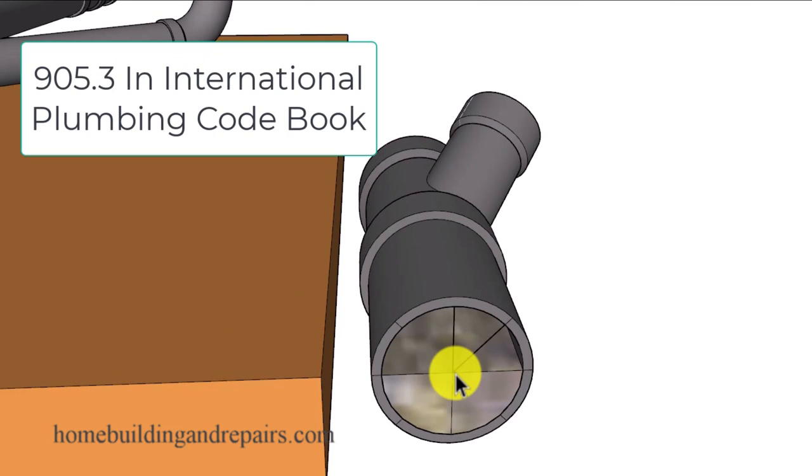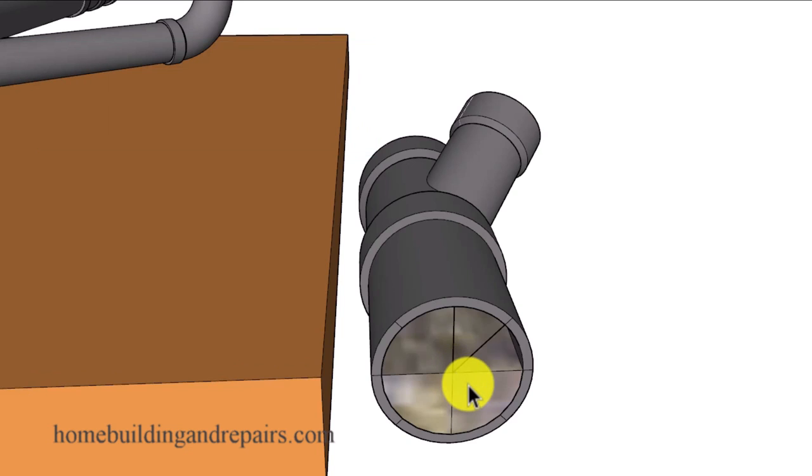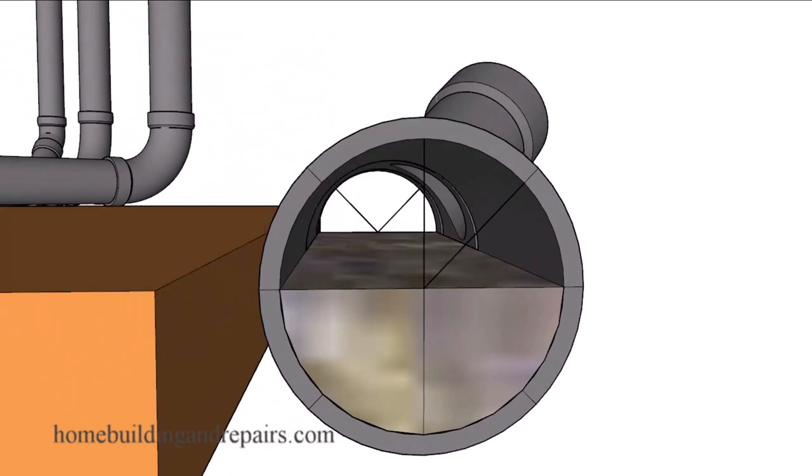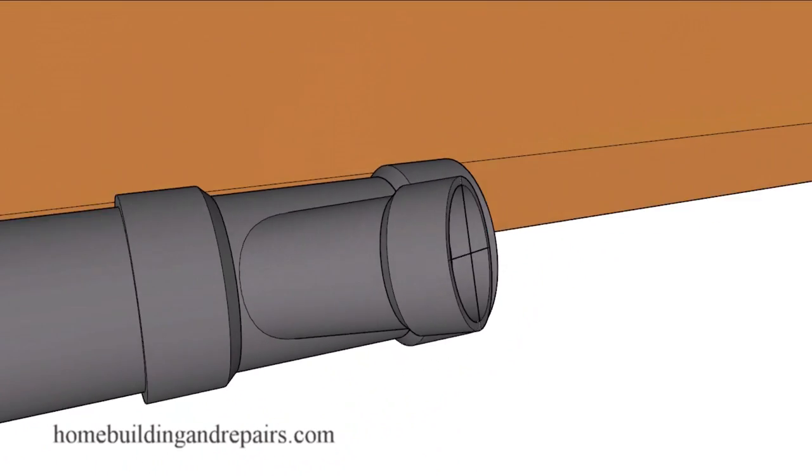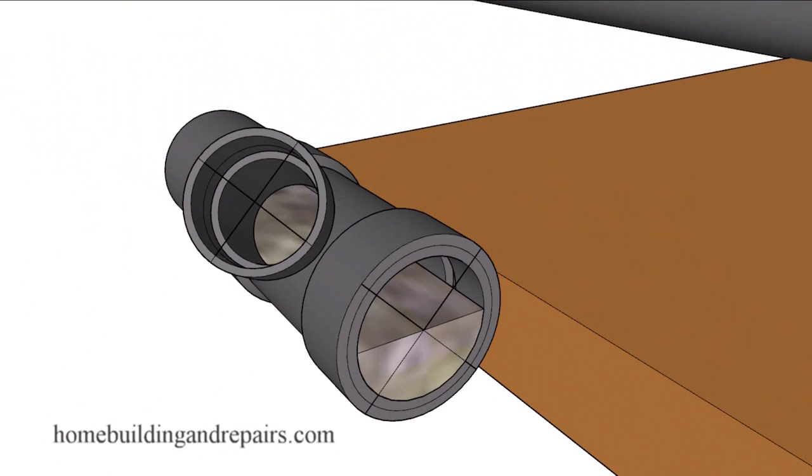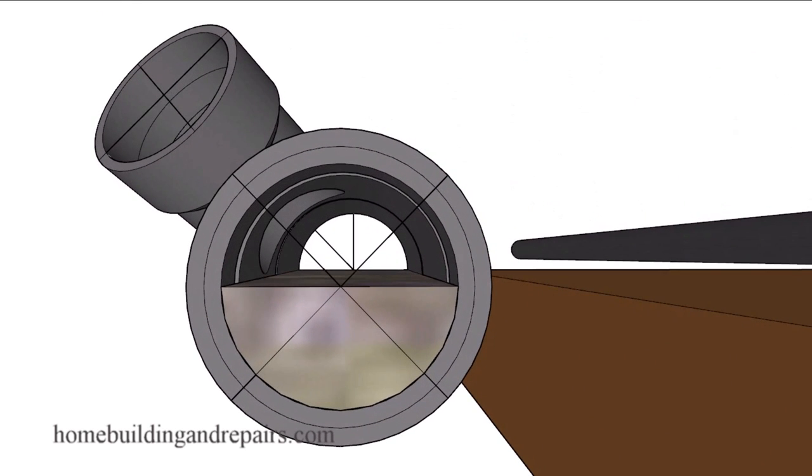And the building code says that dry vents connecting to horizontal drain pipes shall connect above the center line of the horizontal drain pipe. And almost all of the plumbers that I've worked with suggest that this means this pipe right here cannot be rotated more than 45 degrees from its vertical position. However, with that said, I've actually seen plumbers rotate these pipes a lot further. I've seen them rotated just barely off of the horizontal position. So you might want to check with your local building department to see if that will be allowed in your area or allowed under certain special circumstances.